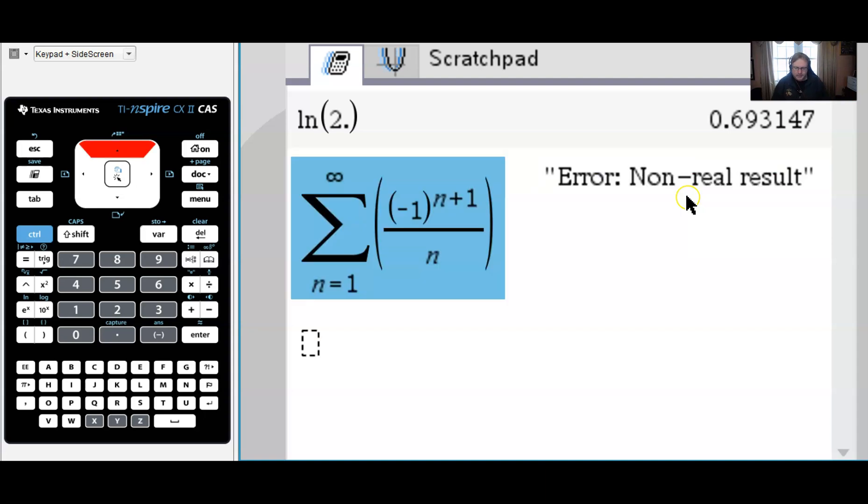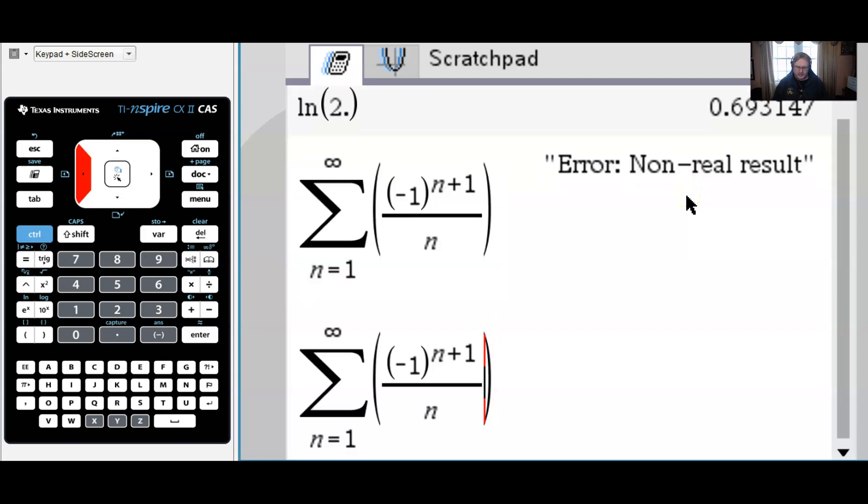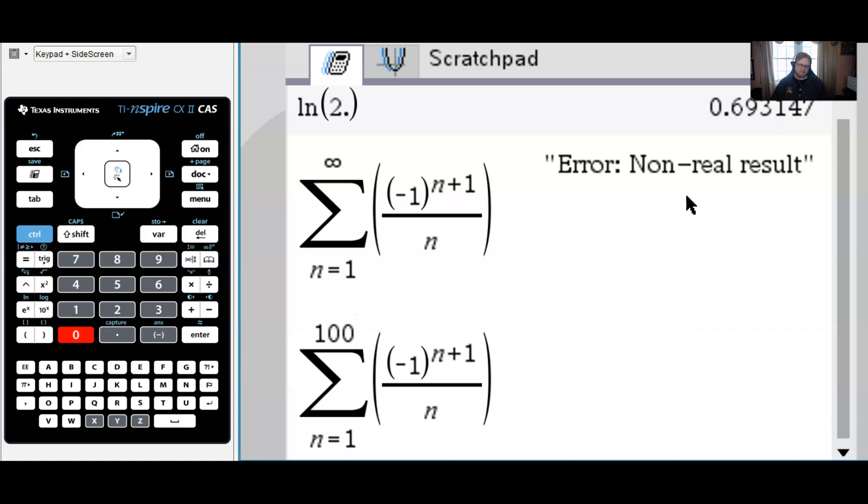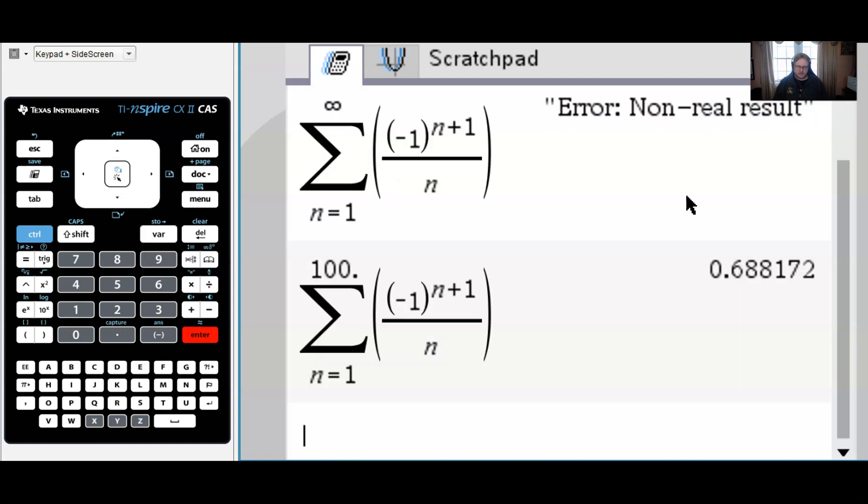But what I can do is maybe give me a redo here. And maybe I can just say, well, let's not let this thing go all the way up to infinity, but maybe up to, say, 100. And then I'll put a decimal point in there and see if this gives me a result. And it does, 0.688.